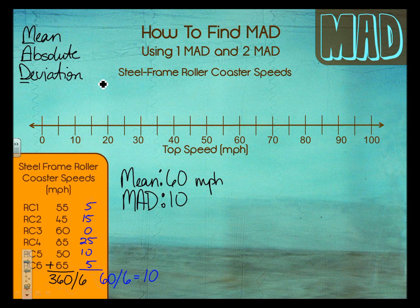Roller coaster 1 — we're going to start with the very basics. It is 55, so I'm going to put a point at 55. You can use X's, you can use dots — whatever you can be neat with. You want to be careful to line them up as exact as possible so your dot plot looks nice, neat, and organized, and you can really see what's going on. We only have six points.